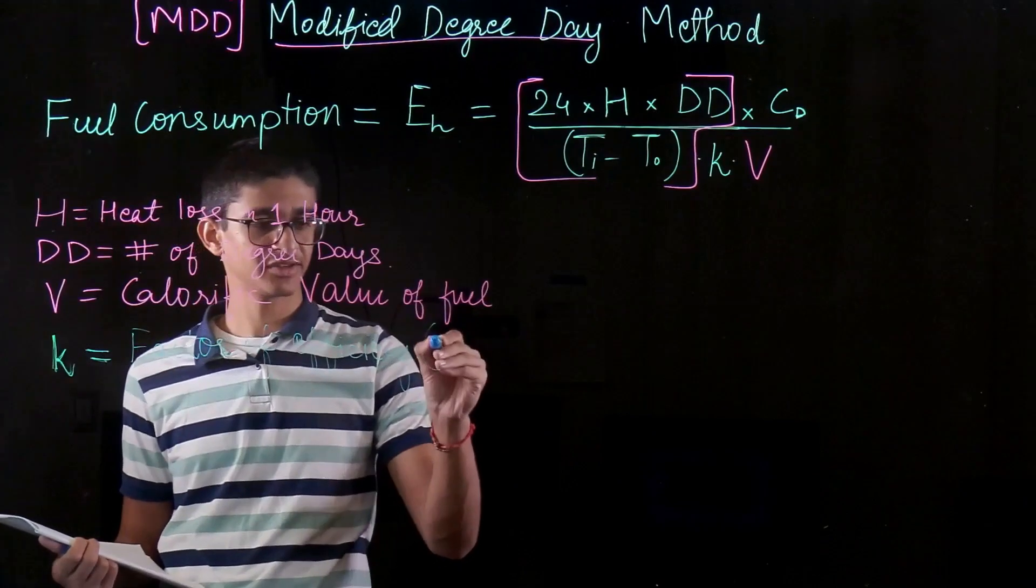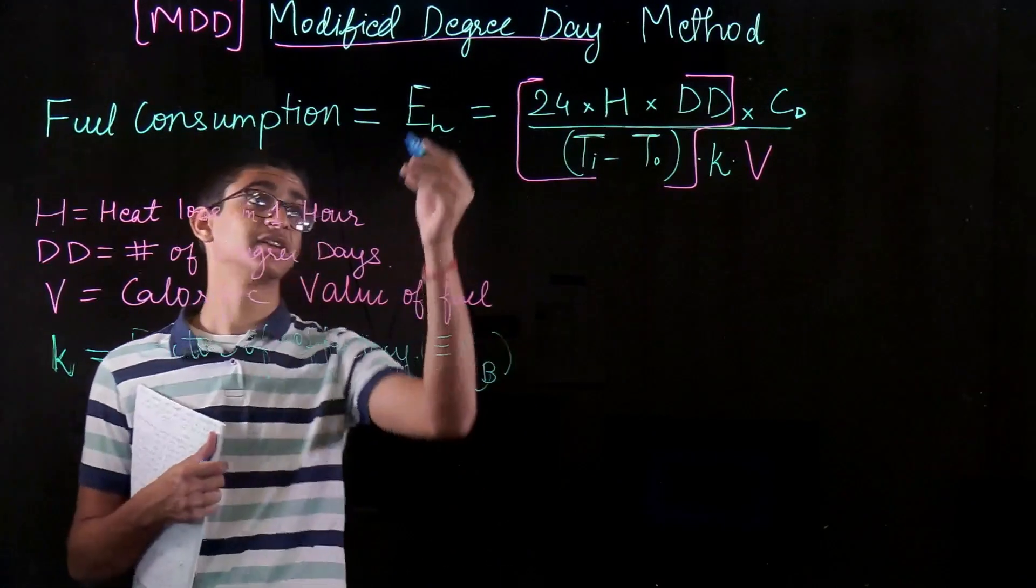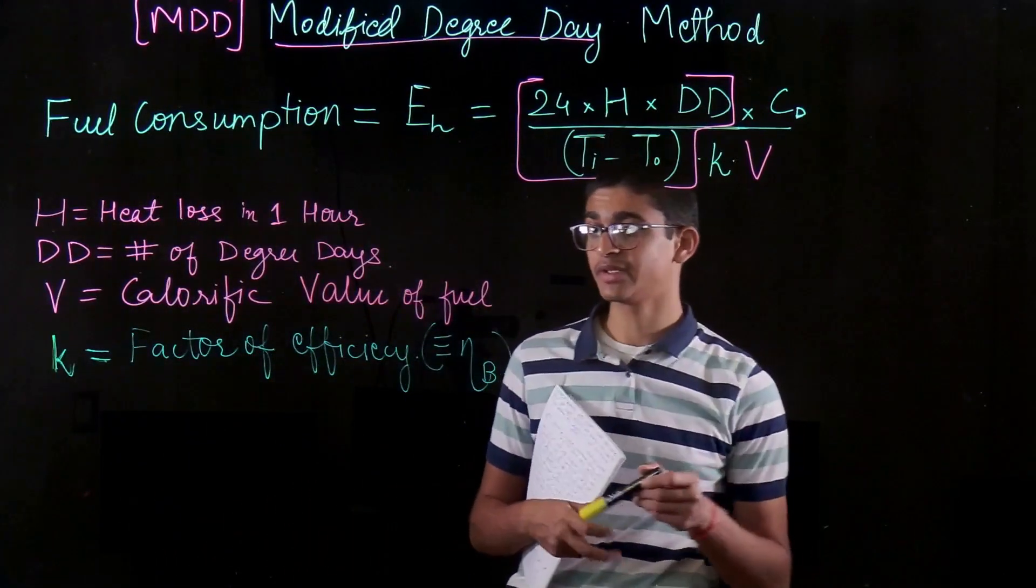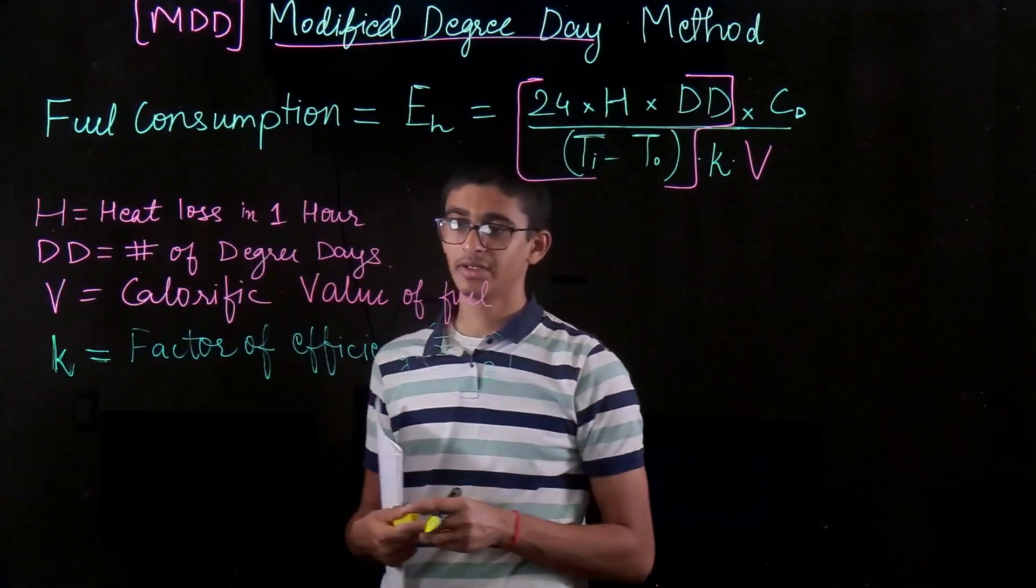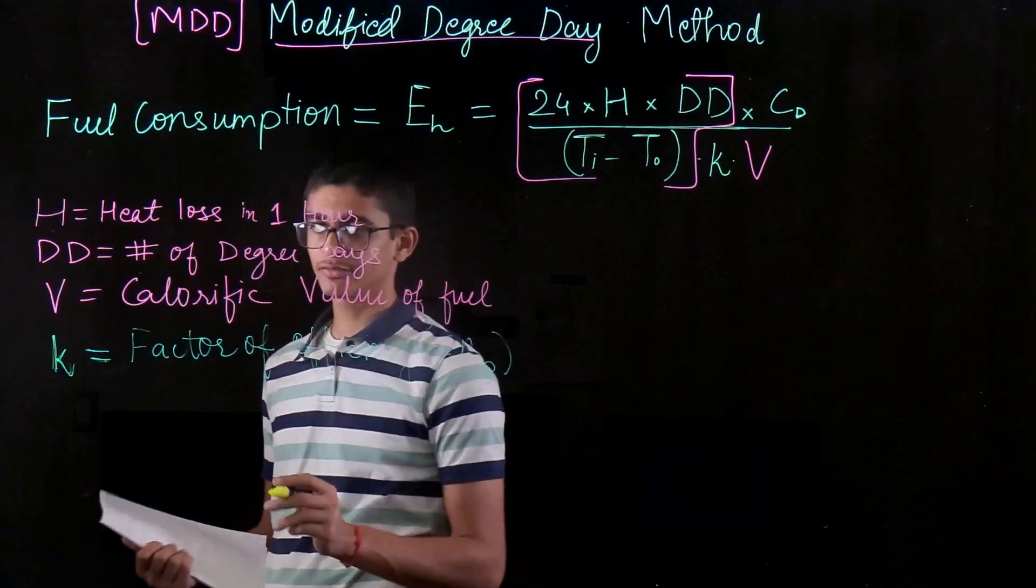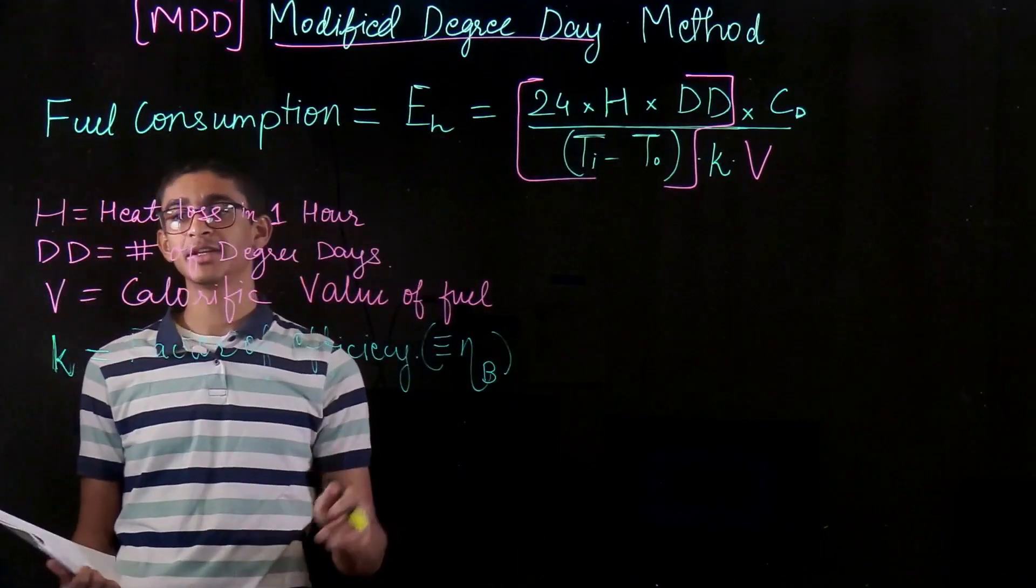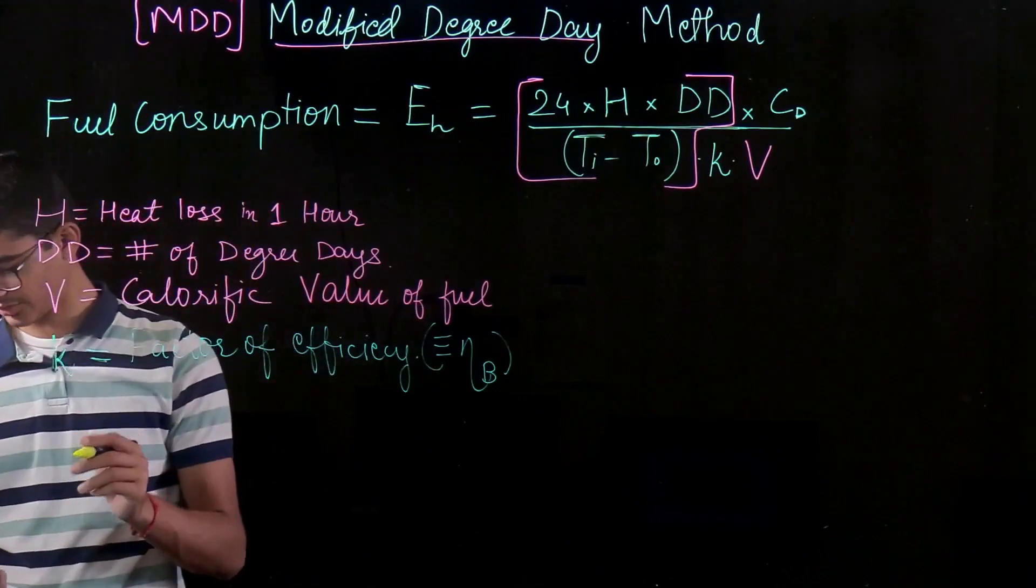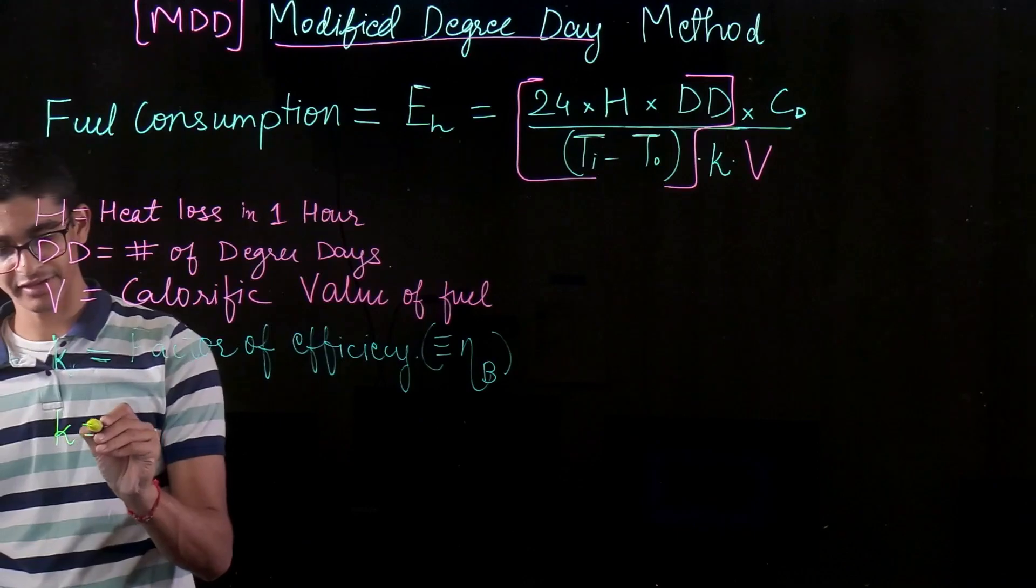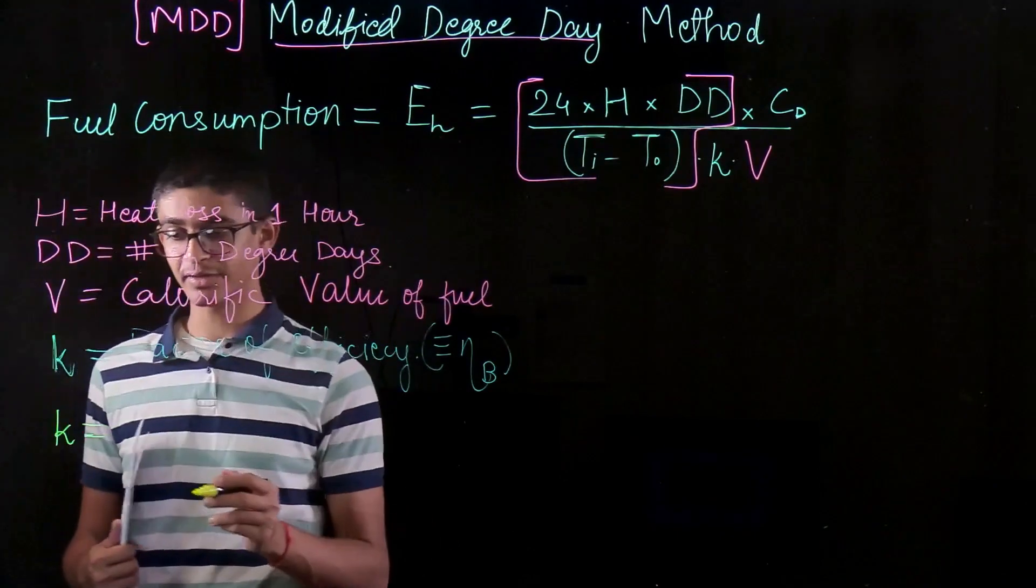Which is very much similar to what we had efficiency of the boiler in the previous case of degree day method. But as I said, it is one of the disadvantages of that method that we are assuming a constant efficiency of our boiler, which might not be the case for all the boilers. Because if we are operating the boiler at part loads, the efficiency keeps on changing. The efficiency might reduce. So my K factor now takes into account those changes in the efficiency based on part load and based on the technology which we are using.